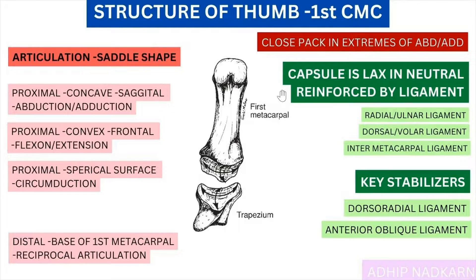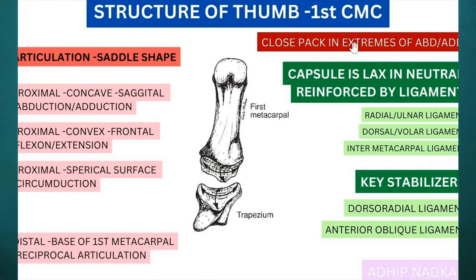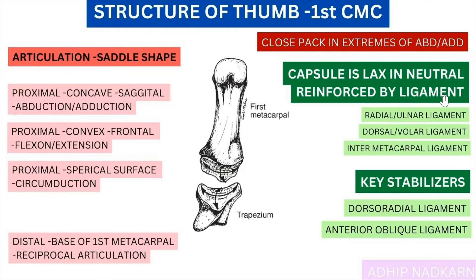Now let's look at the capsule. The capsule around the CMC joint is lax in the neutral position. It is most loose in neutral, and closes back in complete abduction and complete adduction. Because the capsule is lax, it is reinforced by radial and ulnar ligaments, dorsal and volar ligaments, and the intermetacarpal ligament. However, the two main stabilizing structures are the dorsal radial ligament and the anterior oblique ligament.